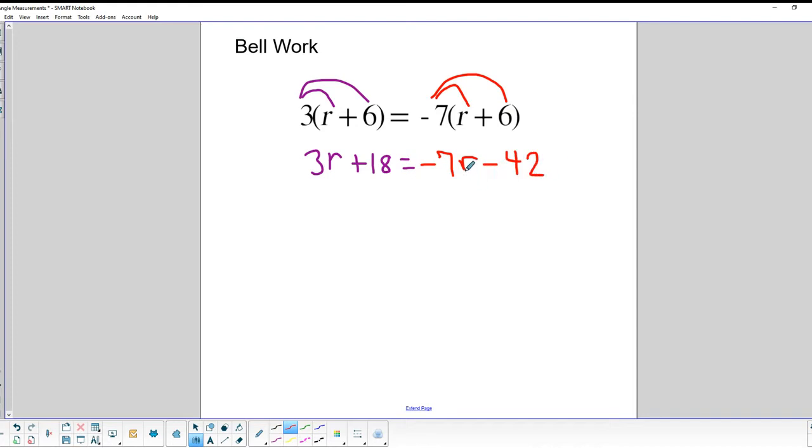All right, so far so good. We're going to collect the like terms on the respective sides of the Great Wall of China, or the equal sign. So 3R, which is already on the left side, will be joined up with minus 7R, because as it moves over, it becomes plus 7R. And then on the right side, we have negative 42, who will join forces with 18, which moves across and becomes its opposite, or minus 18.